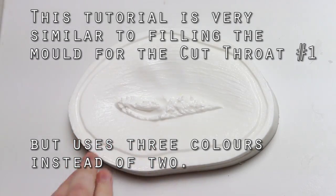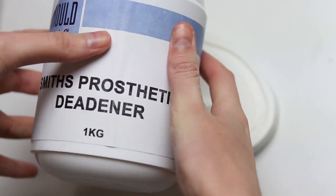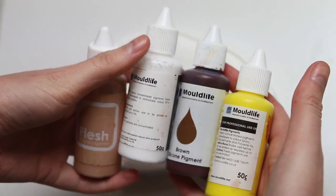For this makeup you will need a mold, a silicone such as Plattsil Gel 10, deadener, and silicone pigments. I have yellow, brown, white, and flesh.